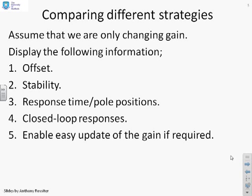We might want to know the closed loop offset, check for stability, know about response time and pole positions, plot the closed loop responses to see the behavior - is it oscillatory, does it overshoot - and easily update the gain to see what effect that has on all these attributes.